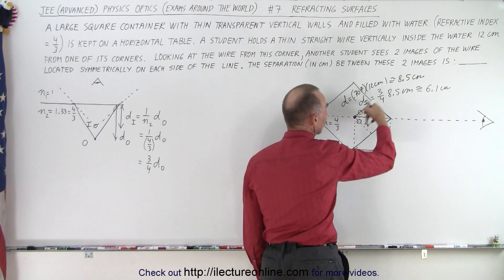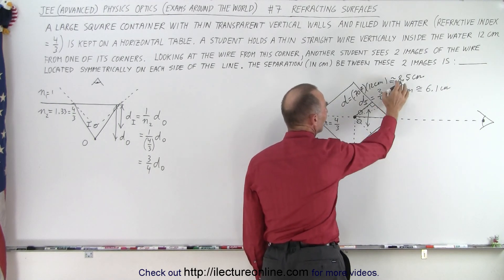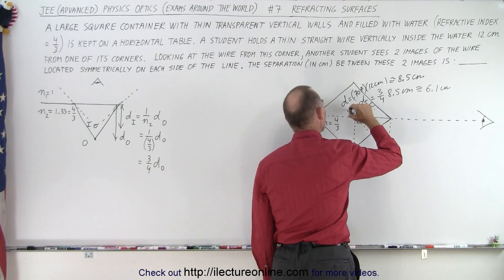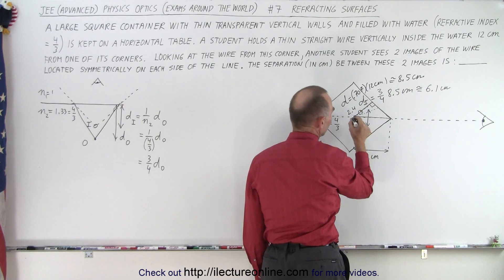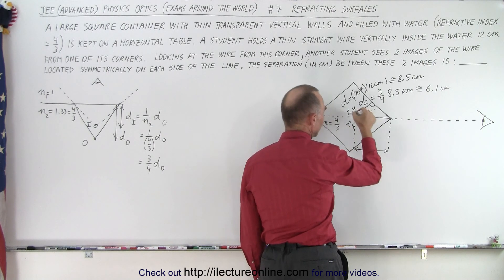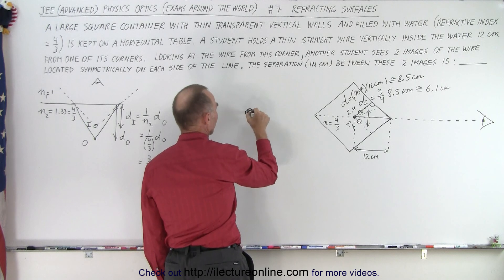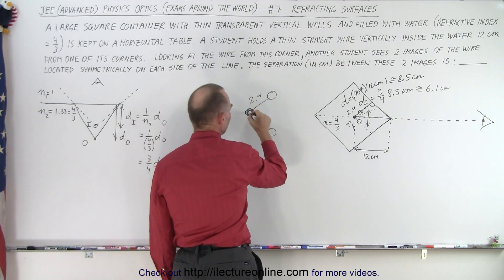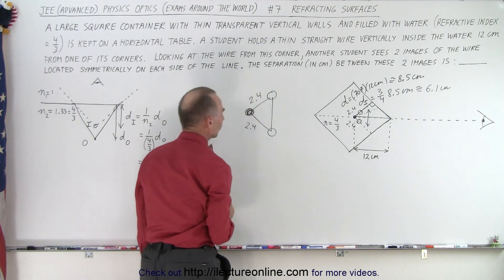Since this here is 8.5 centimeters, that means that this distance here would be 8.5 minus 6.1, which would be about 2.4 centimeters. So this distance from the object to the image is 2.4 centimeters. That means this distance here is 2.4 centimeters as well. So now we have another triangle. Here's the object, here's the image, here's the image. This distance is 2.4, this distance is 2.4, and we're asked to find this distance right here.